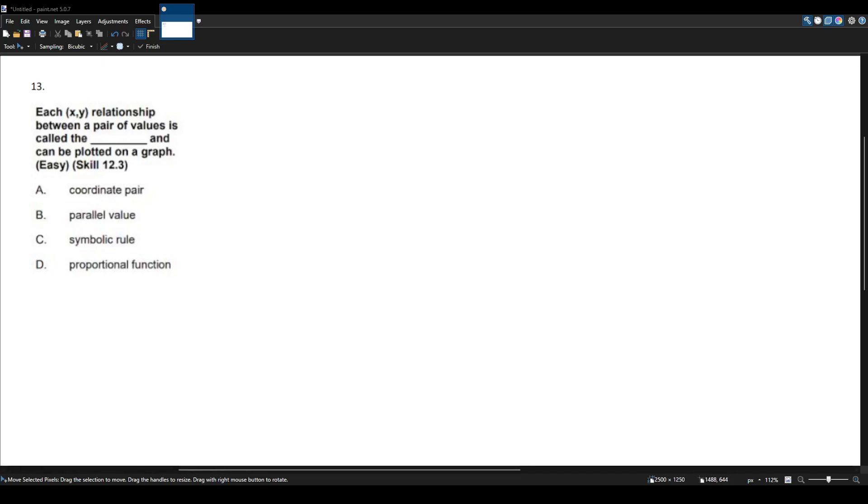Here we have another Math CST question for the multi-subject exam. Each xy relationship between a pair of values is called a blank and can be plotted on a graph.